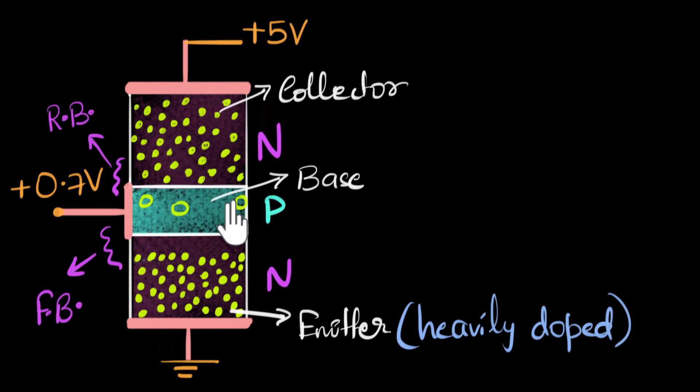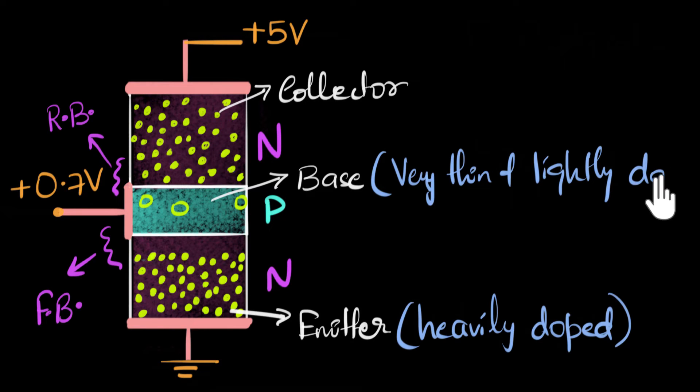On the other hand, look at the base region. The base region we've already seen, for proper working of a transistor, it has to be thin, very thin, very thin, and lightly doped, very lightly doped.